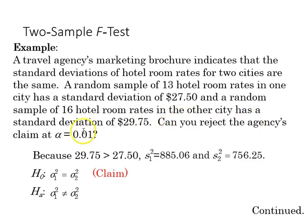Can we reject the agency's claim at the 0.01 level? 29.75 is greater than 27.50, so that's going to become our first sample.